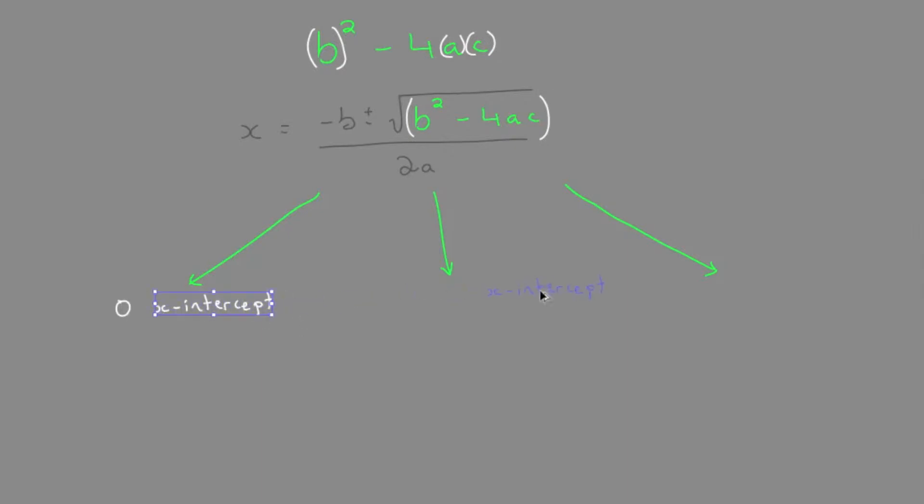So we've talked a little bit about getting no x-intercept. That's when there's a negative under the roots, when the discriminant is negative.